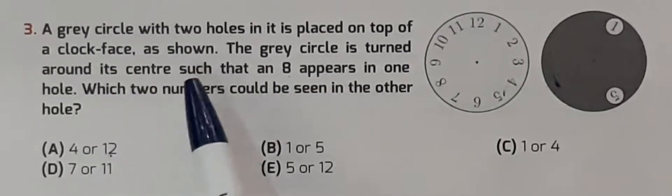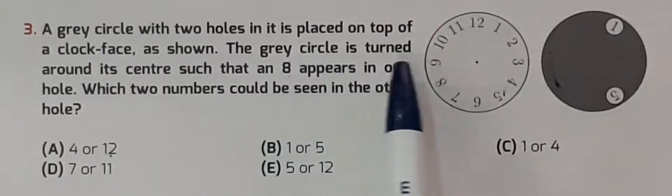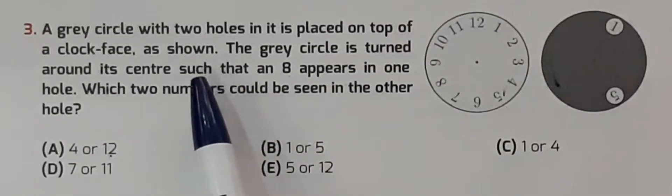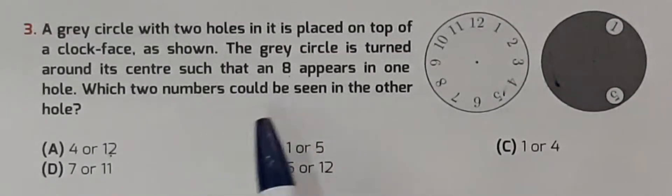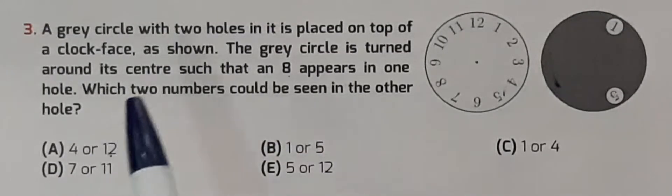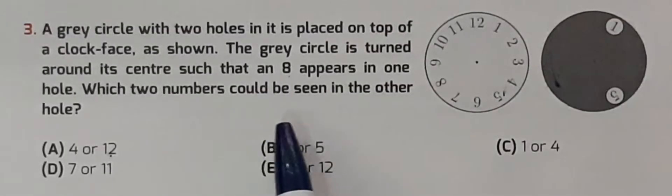A grey circle with two holes in it is placed on top of a clock as shown. The grey circle is turned around its center such that an 8 appears in one hole. Which two numbers could be seen in the other hole?